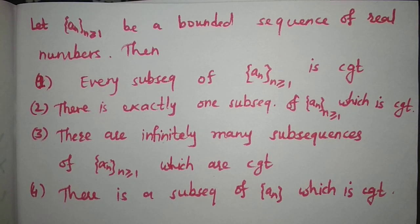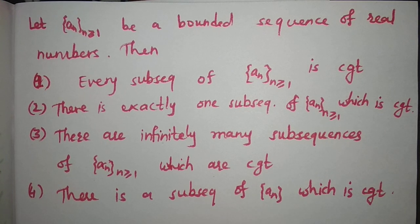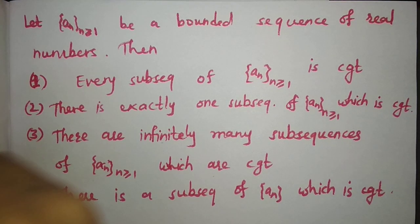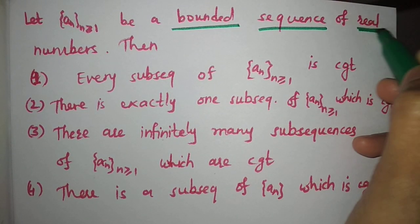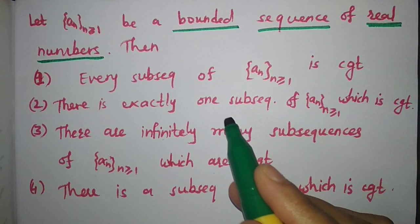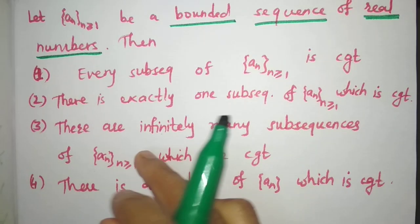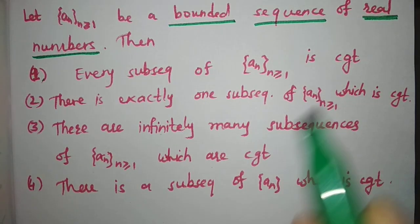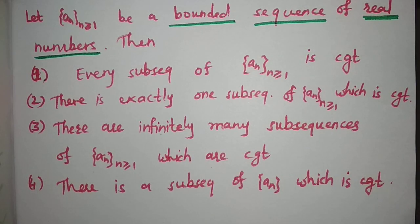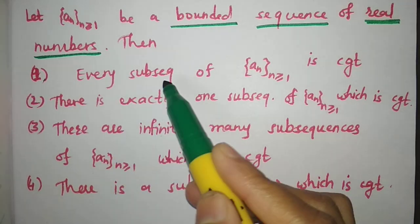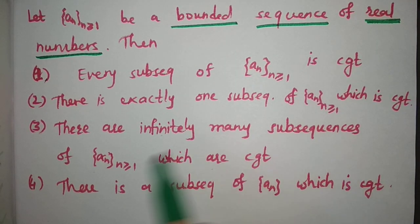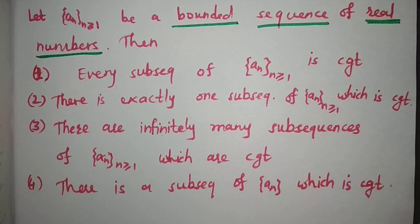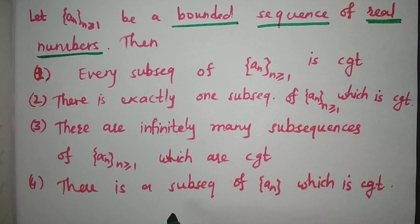In this video I am going to solve a question from GATE 2019 December Part C. Since it is Part C, more than one option can be correct. The question is: let a_n be a bounded sequence of real numbers. We are given four options and we have to choose which are true. Option 1: every subsequence of a_n is convergent. Option 2: there is exactly one subsequence of a_n which is convergent. Option 3: there are infinitely many subsequences of a_n which are convergent. Option 4: there is a subsequence of a_n which is convergent.